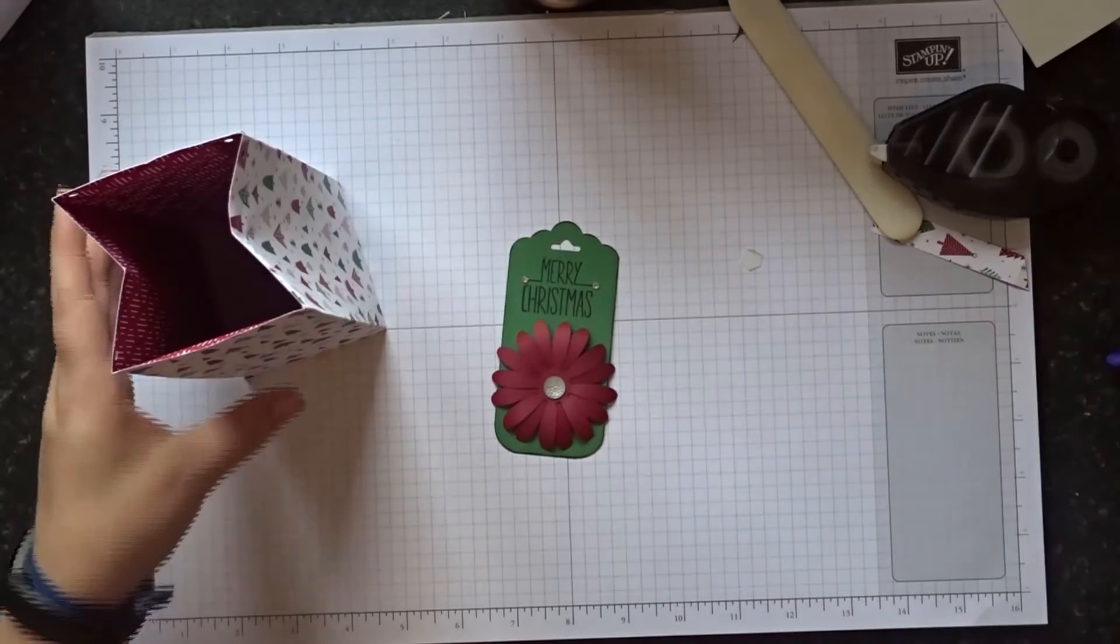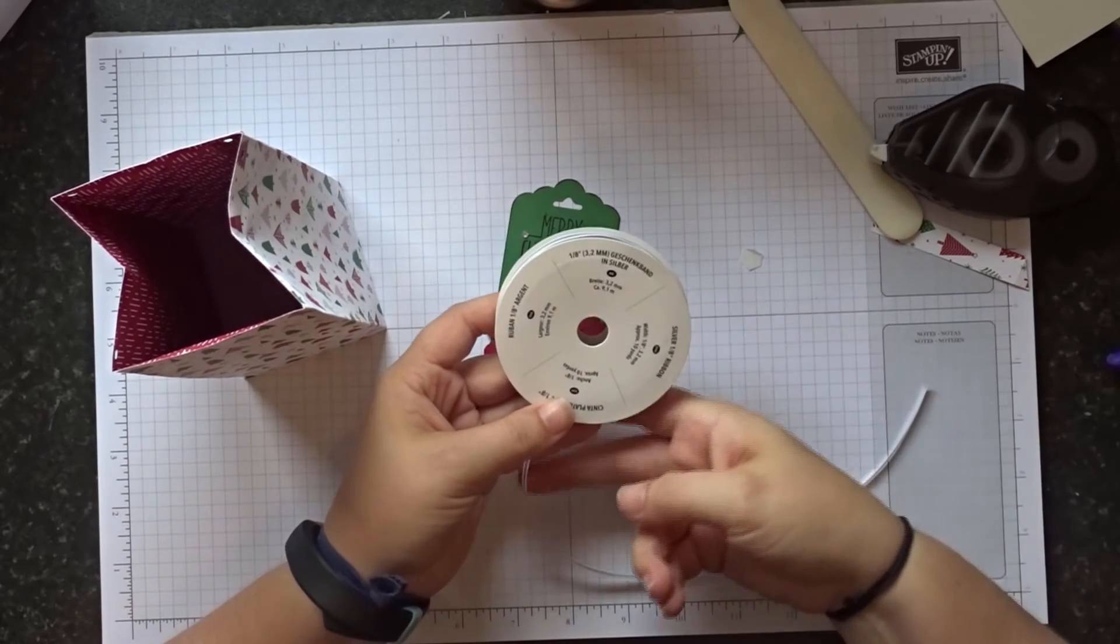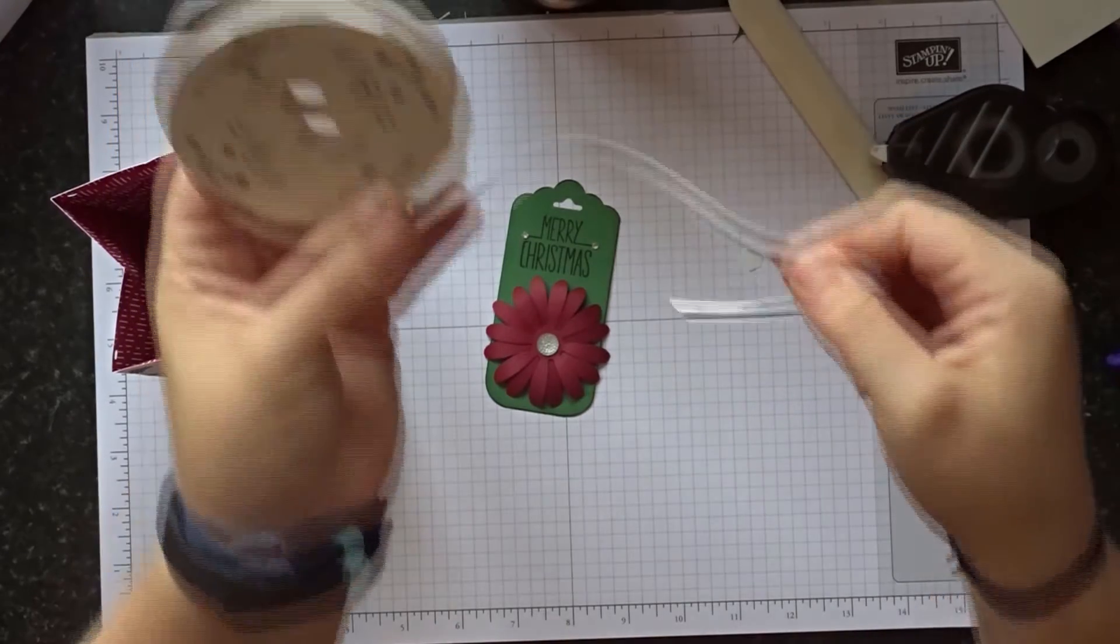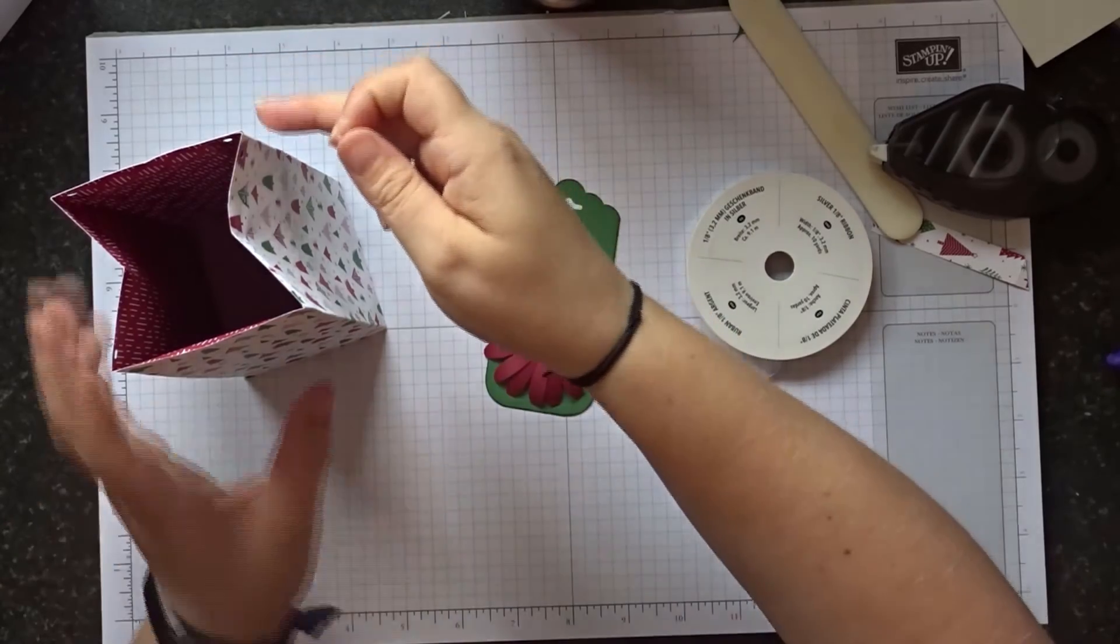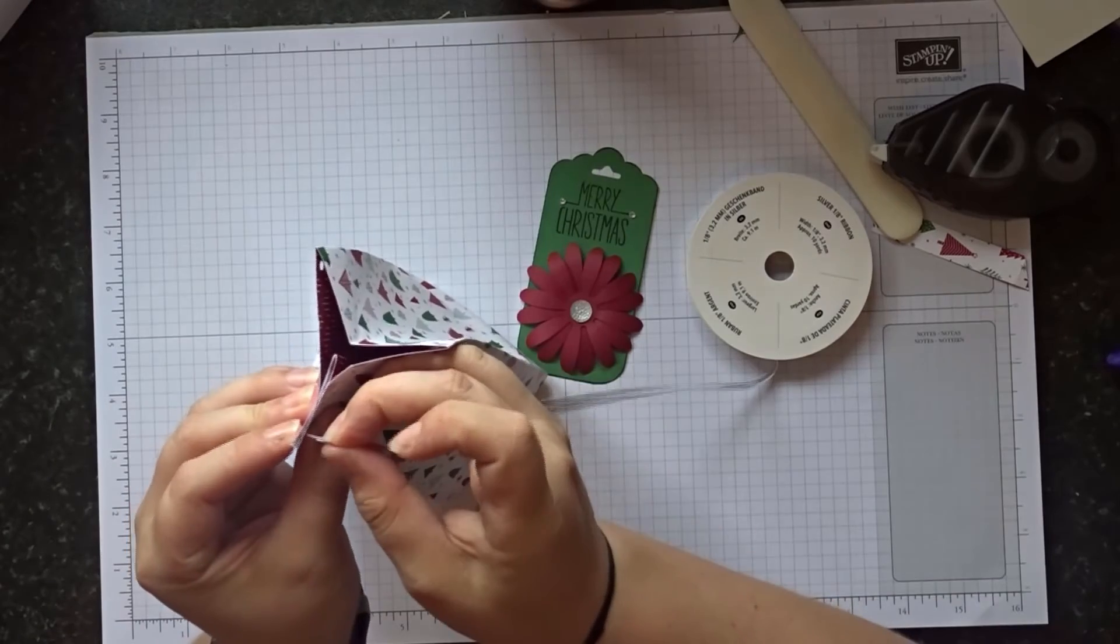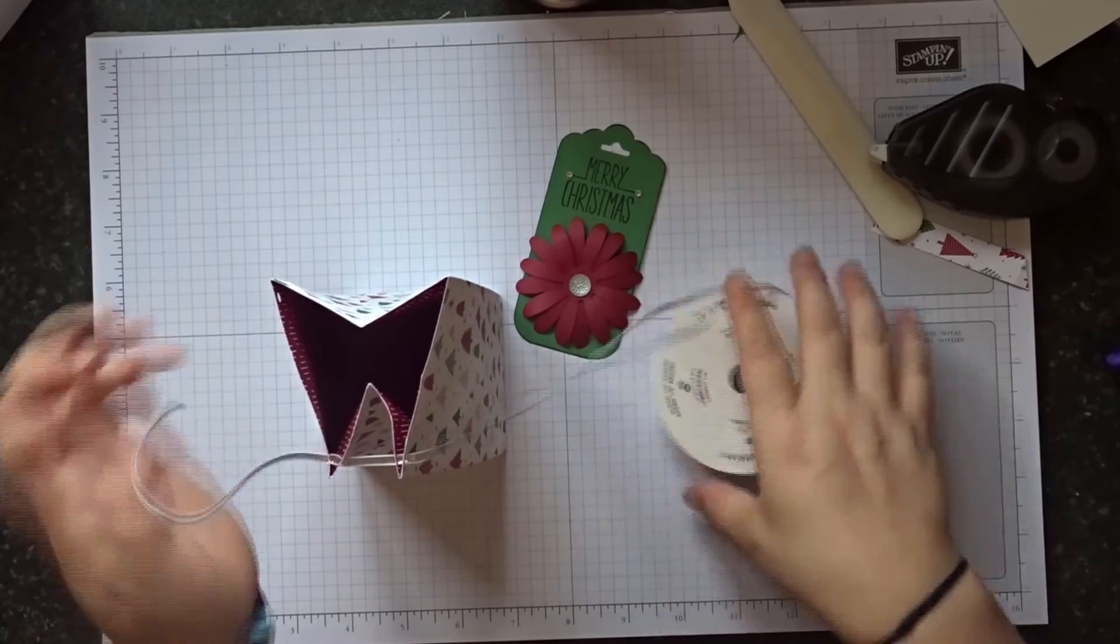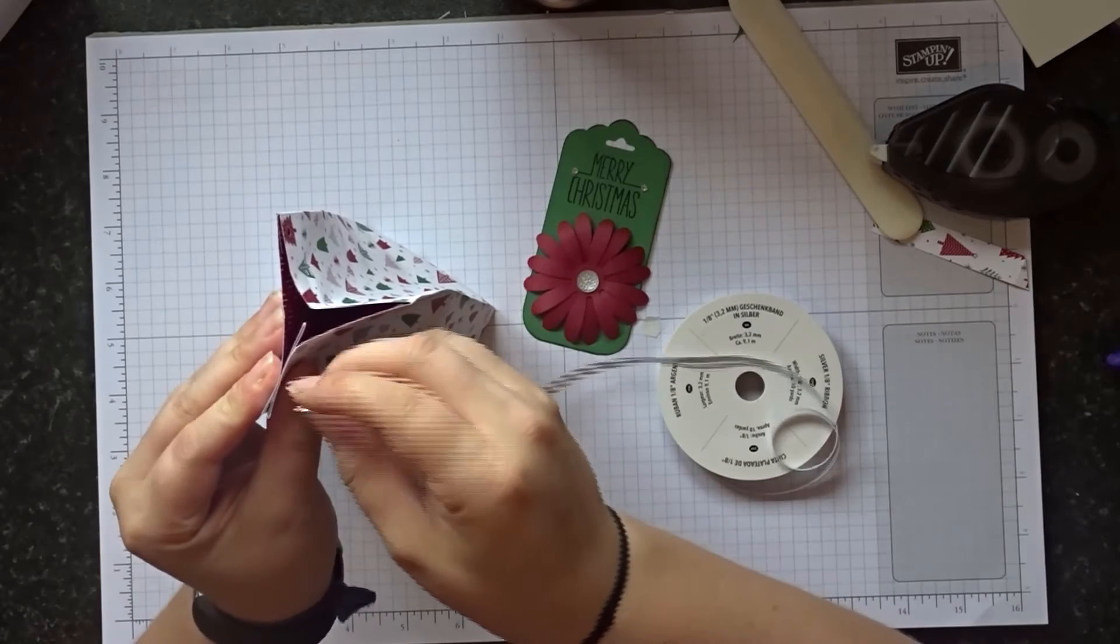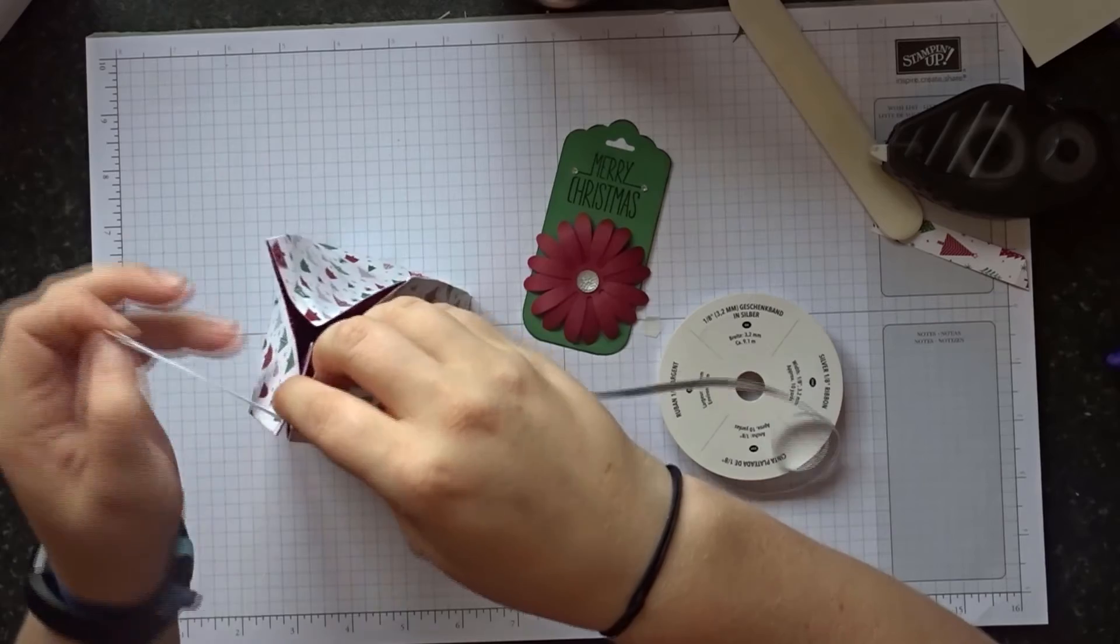We've got our gift bag. So we now need some ribbon to tie it. Today I am using the one eighth of an inch silver ribbon. Hopefully you can see that. So all we need to do is make sure you've got a point on it. That makes it easier. Find the front of your bag again. This is mine. And feed through from the back. In fact that was a bad idea. Completely ignore that. Feed through from the front.